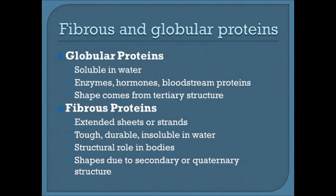Proteins can be globular or fibrous. Globular proteins are soluble in water — examples include enzymes, hormones, and bloodstream proteins — and their shape comes from tertiary structure. Fibrous proteins tend to be more extended sheets or strands; they're tough, durable, and insoluble in water. An example is keratin. Fibrous proteins play a structural role, and their shapes are due to secondary or quaternary structure.